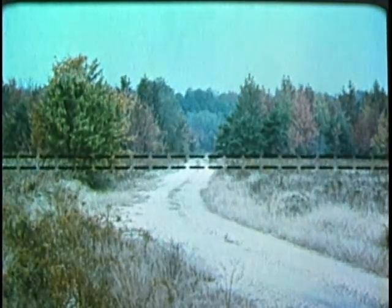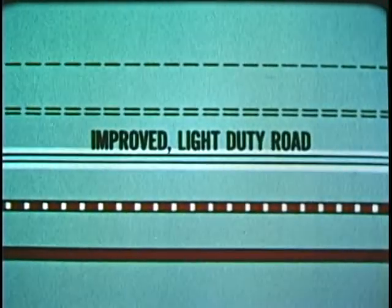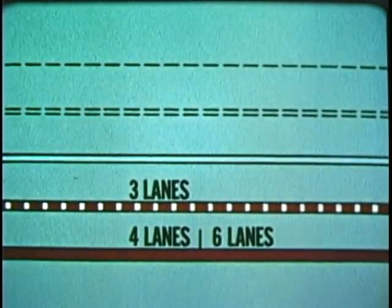Unimproved dirt roads are indicated by parallel broken lines on the military map. Important trails, footpaths, or pack trails are shown by a single broken line. Thus it is evident that five different types of roads are depicted on military maps by distinctive individual symbols: a trail, an unimproved dirt road, an improved light duty road, a hard surface medium duty road, and a hard surface heavy duty road. The width of hard surface roads, if more than two lanes, is indicated above them, and all five symbols stand out clearly and distinctly.